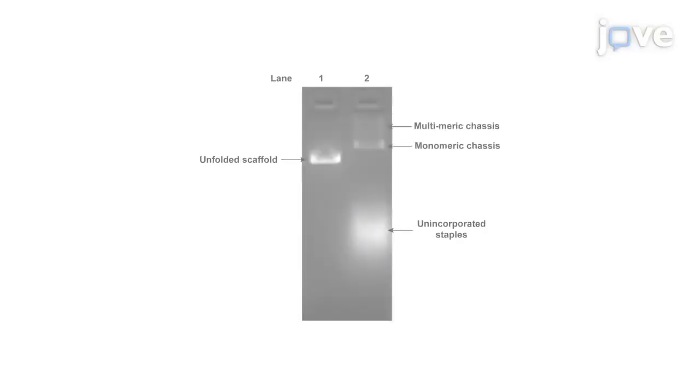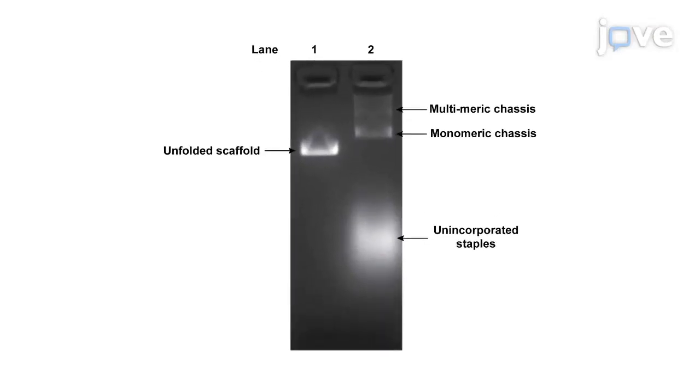By using DNA origami for molecular construction, this method controls for the type, number, and location of motors on precisely defined cargo shapes.